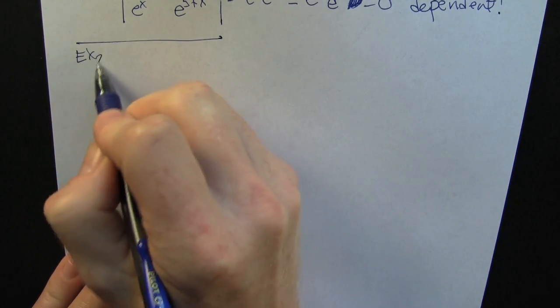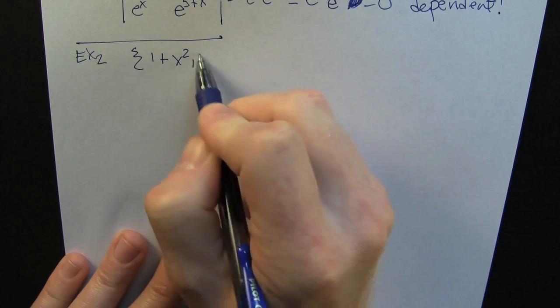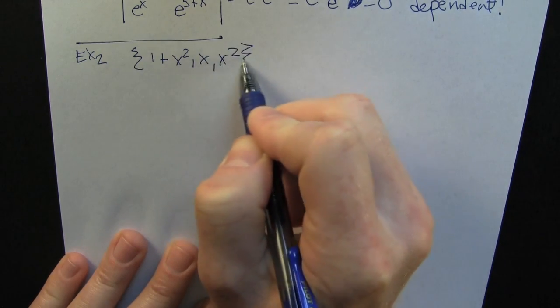And the sucker is 0 everywhere. Okay. All we needed to do is find a single value that it was 0, and it was 0 everywhere. So that was dependent.